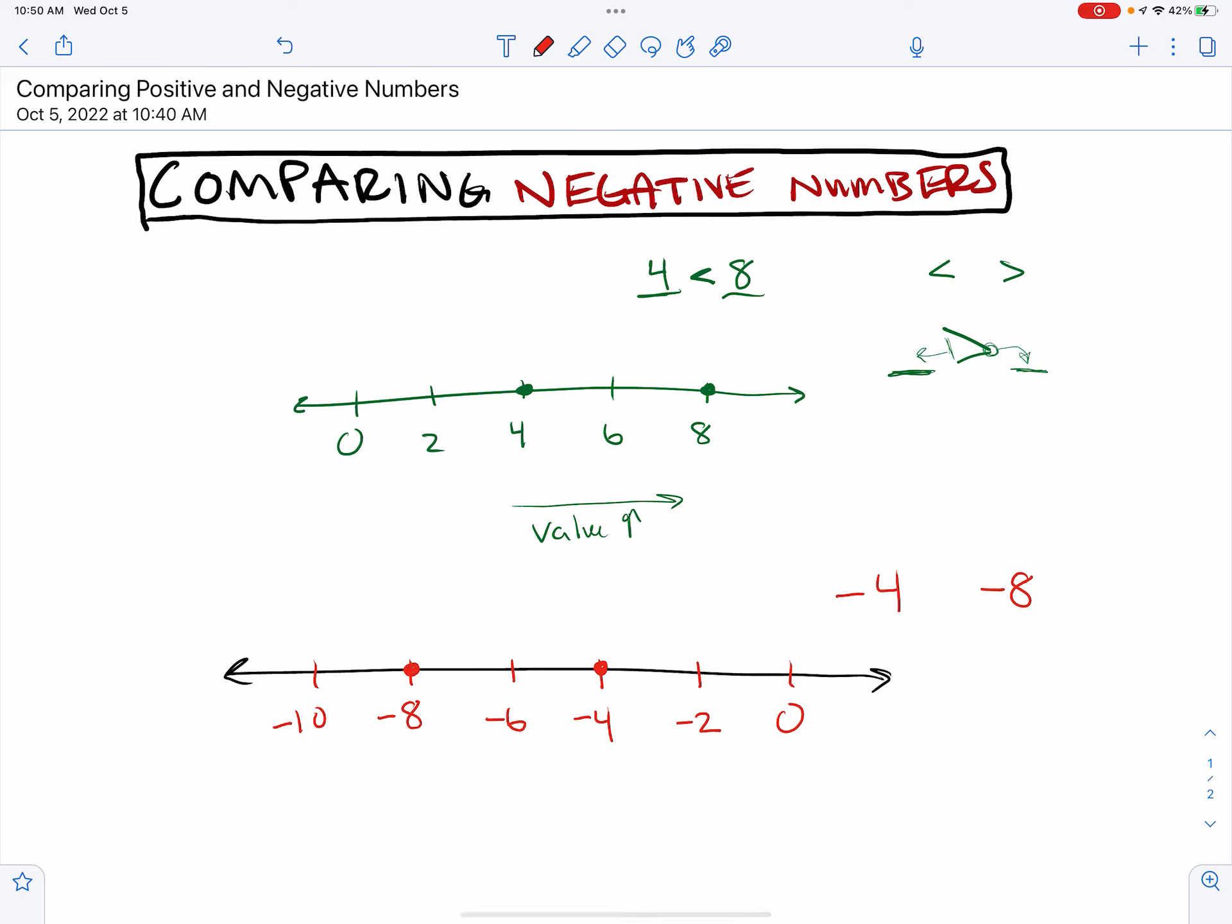And then negative 8 is 8 units to the left. So based on this, because I know as we travel to the left, the value decreases. That means even though if 8 was a positive number, this would be greater, it's like a greater amount of debt or it has less value. We're further to the left of 0. And so that means that negative 8 is actually going to be less than negative 4.